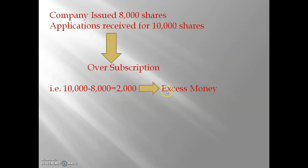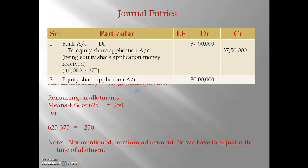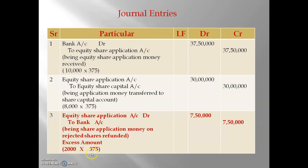Excess applications = 10,000 received minus 8,000 issued = 2,000 shares. So 2,000 × 375 = Rs. 7,50,000. Being share application money on rejected shares refunded. This completes the applications received entry, applications transferred entry, and the rejection entry.